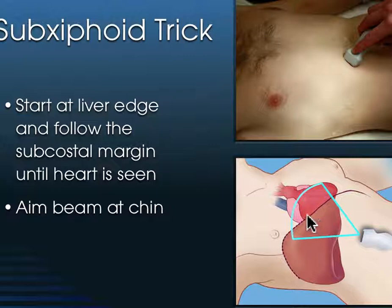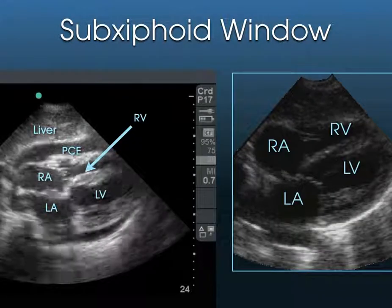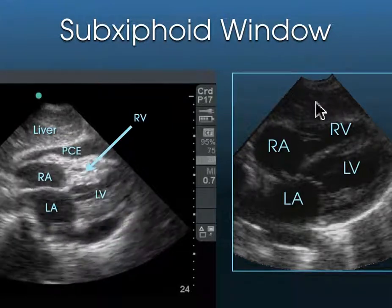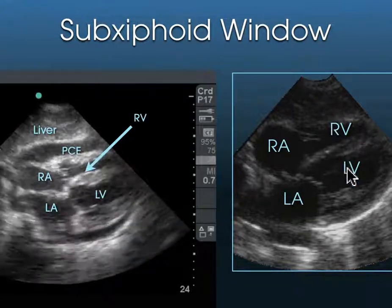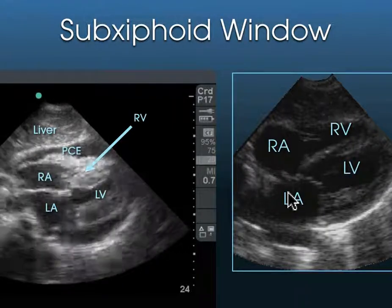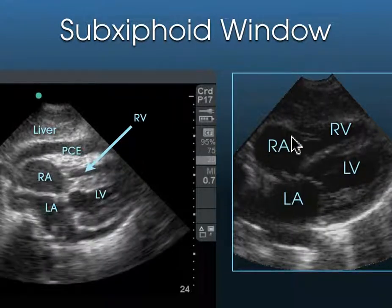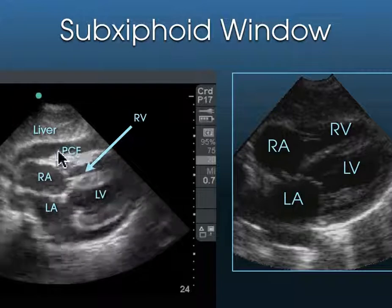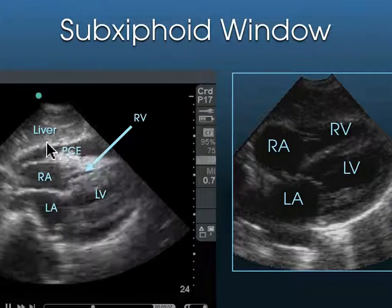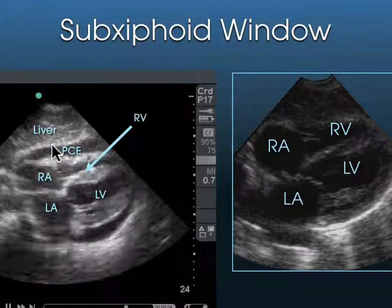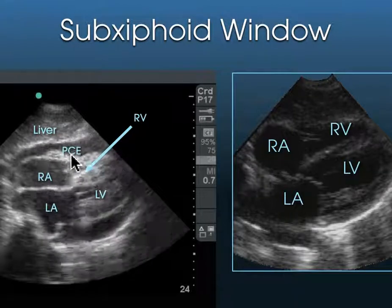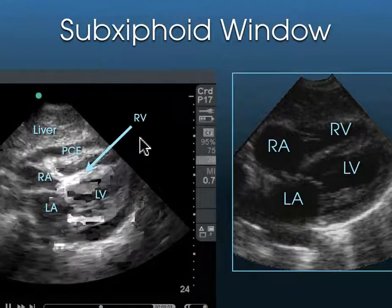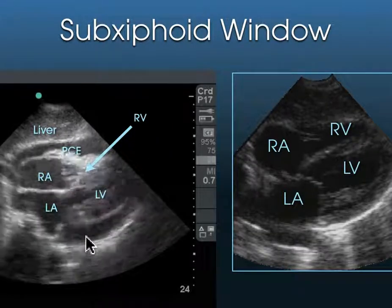In order to get the liver to come out from under the ribcage towards the probe, have the patient take a deep breath. In the sub-xiphoid view we see the following: here's the liver, then the right ventricle, then the left ventricle. Here's the right atrium, and here's the left atrium. The right side of the heart is closer to the liver, whereas the left side is further down. Once we have a pericardial effusion, it's seen as a separation between the anterior pericardium and the myocardium — in fact this effusion is all the way around, including the posterior region.